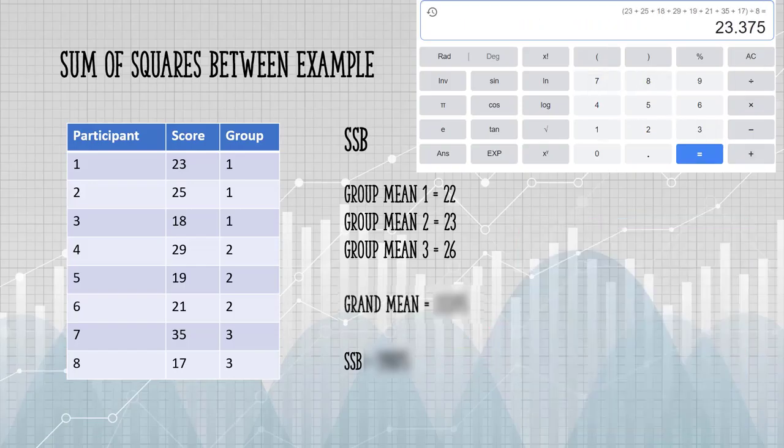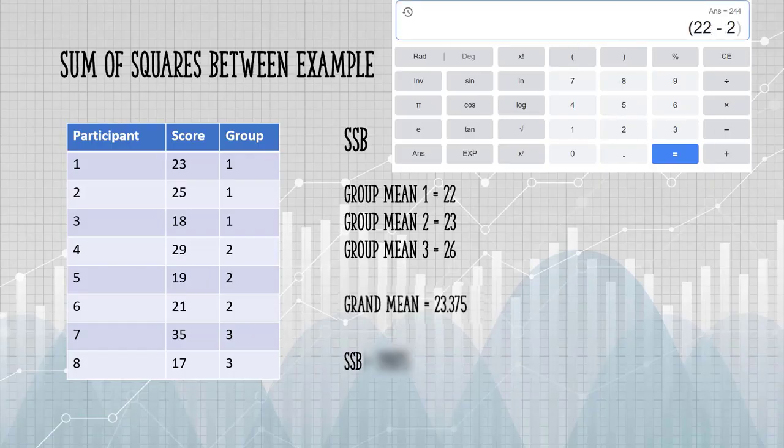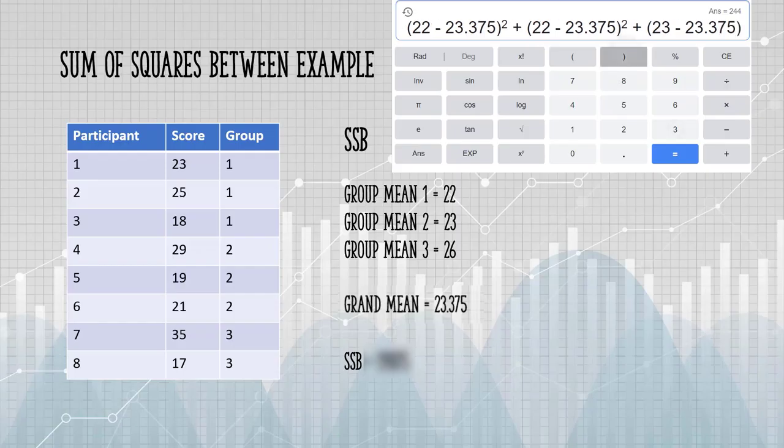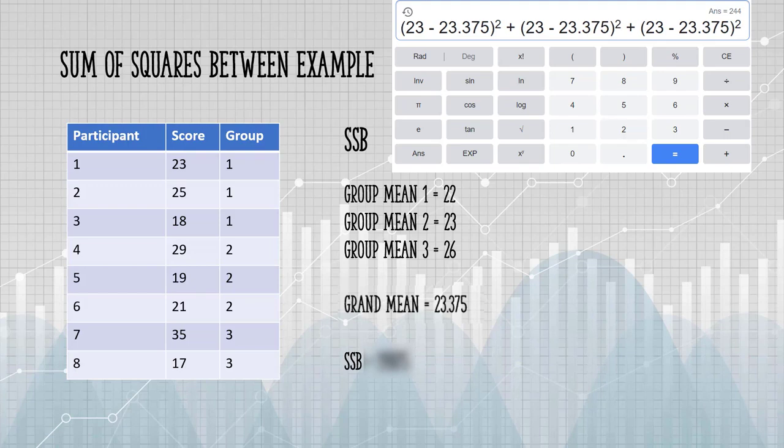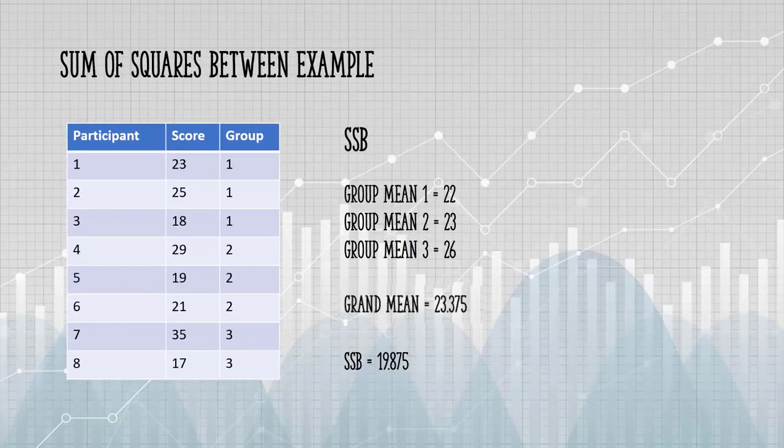That gives us 23.375. So instead of individual scores here, we're comparing groups. We're going to square those differences and sum the square differences. This means we have to do eight separate calculations, the group mean for each data item and the grand mean. That's going to be squared, and we're going to have to add up all of those. When we do that, we get 19.875, and that is our sum of squares between.